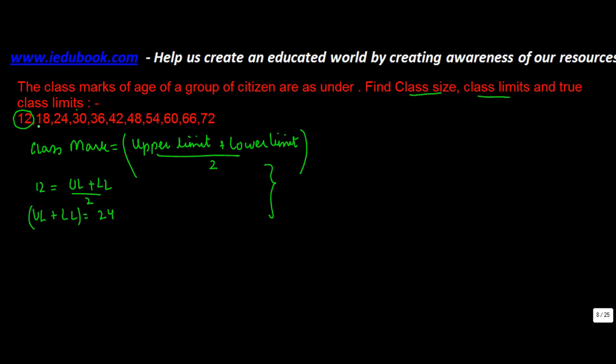Now basically whenever the upper limit and the lower limit summed together and divided by 2 you get the class marks. When you notice this particular set of class marks you will notice that the difference between any two consecutive class marks is 6. So you have 12 plus 6 equals 18, 18 plus 6 equals 24, 24 plus 6 equals 30 and so on.